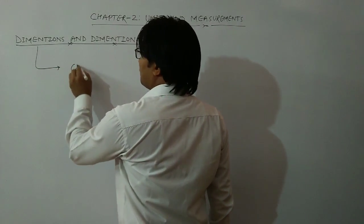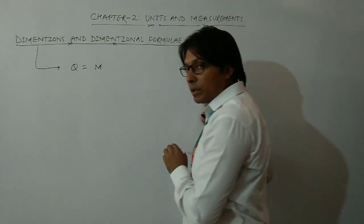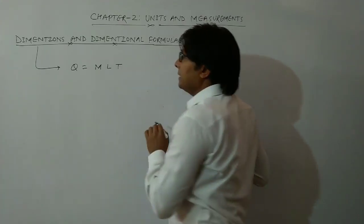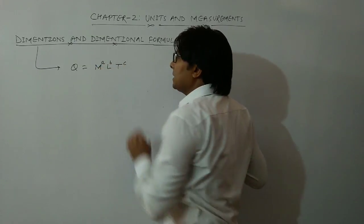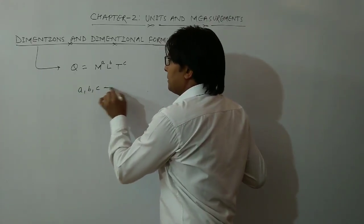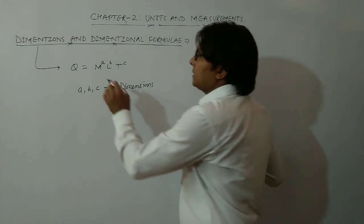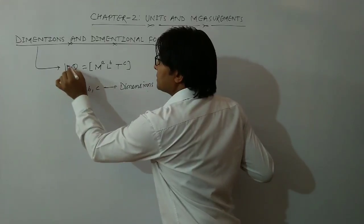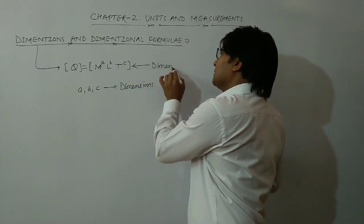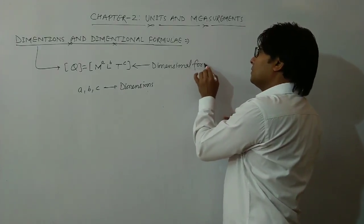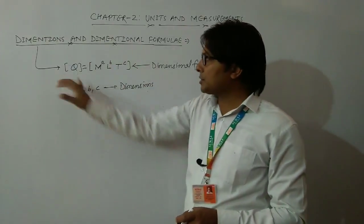Suppose I have a physical quantity Q. If I try to write this physical quantity in terms of the base physical quantities — M, L, and T — raised to some powers, that is power a, power b, and power c, then these powers are known as the dimensions of that physical quantity Q. This formula, written in this form, is known as the dimensional formula of physical quantity Q.